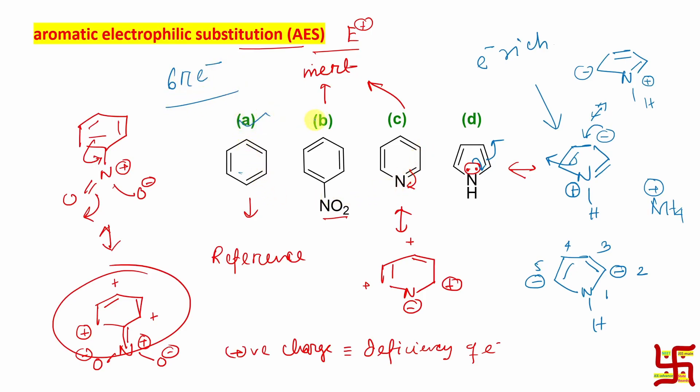Now, all ring A, B and C, they are student actually six-member ring. So, six pi electrons on six carbon atoms. But, if you look, in case of D, here, six pi electrons, remember, on five atoms. Four carbon, one nitrogen. So, consequently, this pyrrole is called as pi excess nucleus. And this is more electron rich.